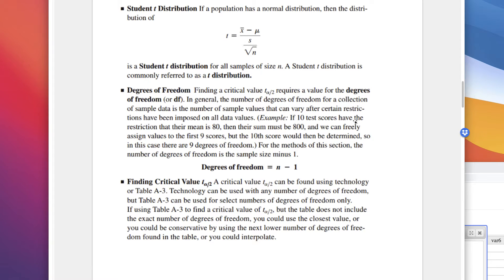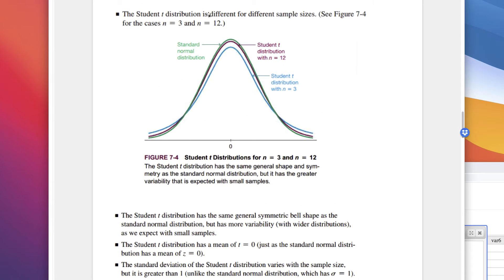For example, if we have 10 test scores with the restriction that their mean is 80, their sum must be 800. We can freely assign values to 9 scores, but that 10th score is then determined — so there are 9 degrees of freedom. For this method, the number of degrees of freedom is n minus 1. The t-distribution is different for different sample sizes, but as n increases it approaches the normal distribution.